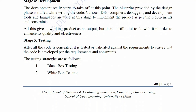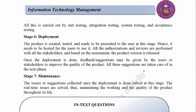Stage 5 — Testing: After all the code is generated, it is tested and validated against the requirements to ensure that the code is developed as per the requirements and constraints. The testing strategies are as follows: Number 1 — Black Box Testing; Number 2 — White Box Testing. All this is carried out by unit testing, integration testing, system testing, and acceptance testing.